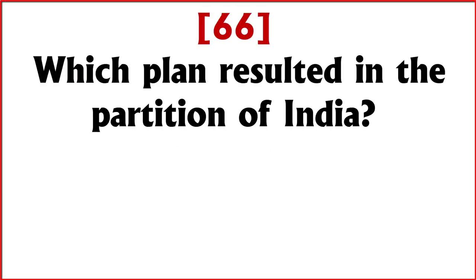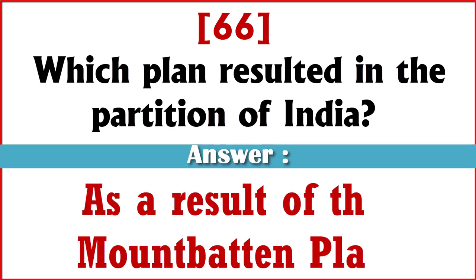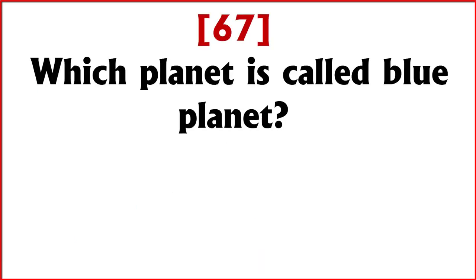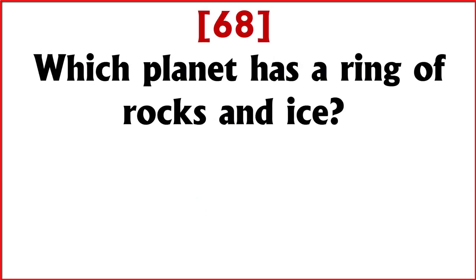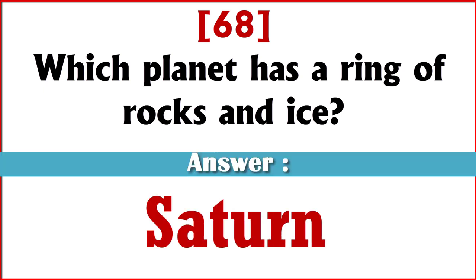Which plan resulted in the partition of India? Answer: The Mountbatten Plan. Which planet is called the Blue Planet? Answer: Earth. Which planet has a ring of rocks and ice? Answer: Saturn.